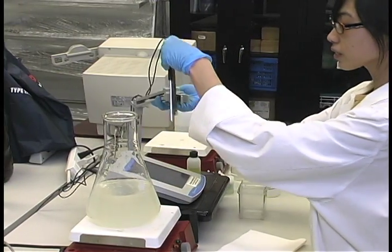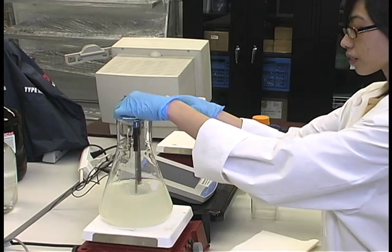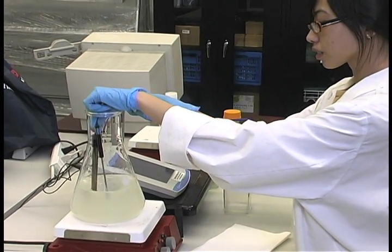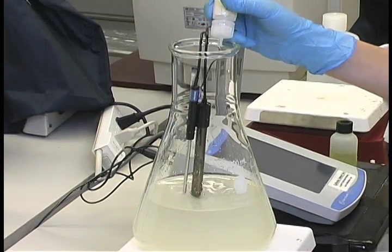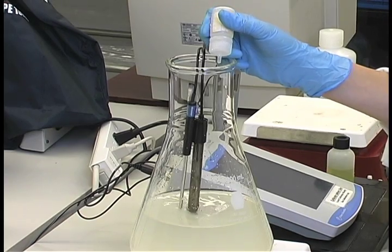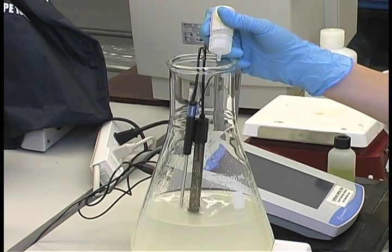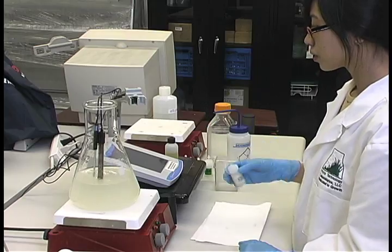While stirring, adjust the medium to the desired pH using sodium hydroxide, potassium hydroxide, or hydrochloric acid. It is important to always adjust the pH of your medium after all components, including gelling agents, have been added.